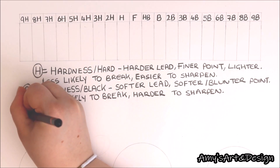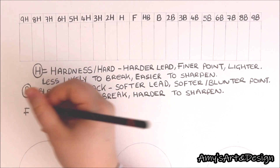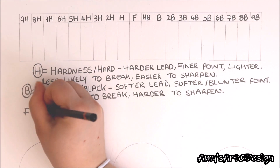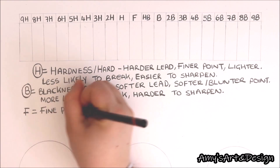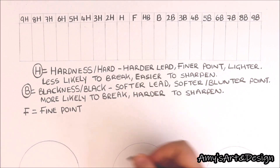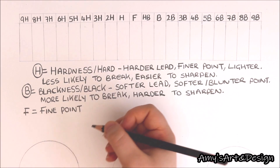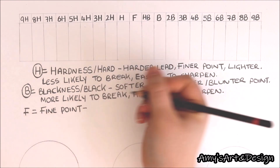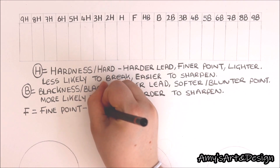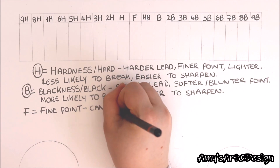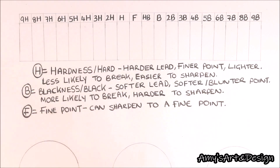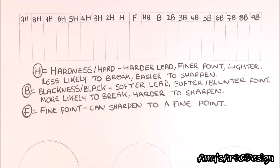Moving on to the letter F, which is probably what confuses people the most because it is a standalone letter on just one pencil. The letter F actually stands for fine point, meaning this pencil can be sharpened to a fine point. It sits effectively in the middle of the H pencils and the B pencils, between the lighter and darker shades of graphite.